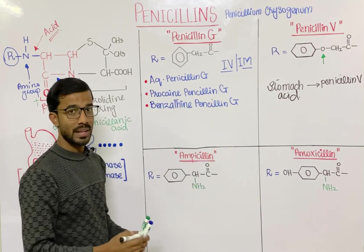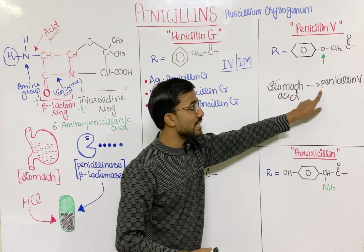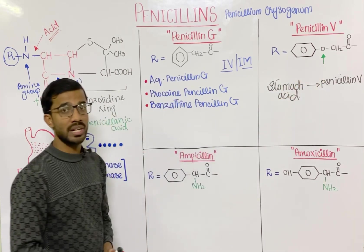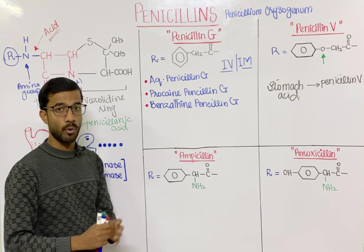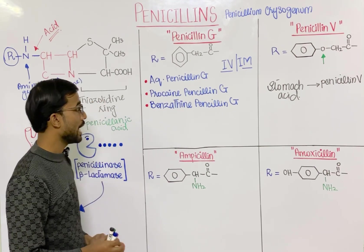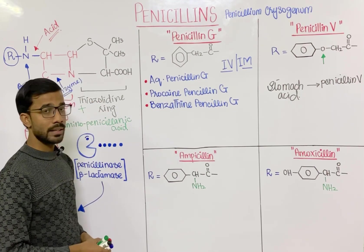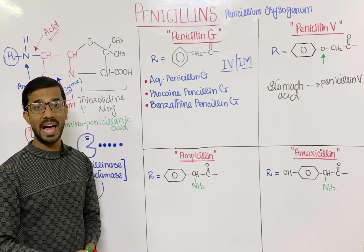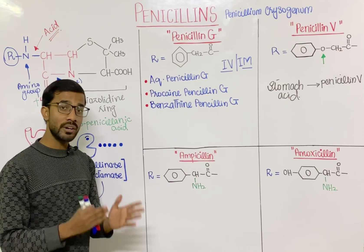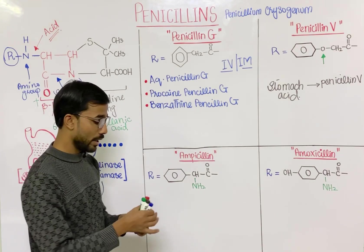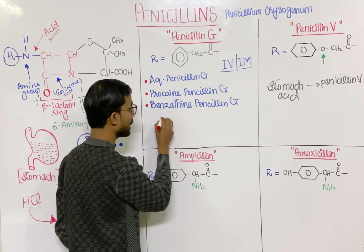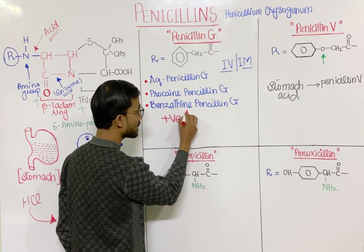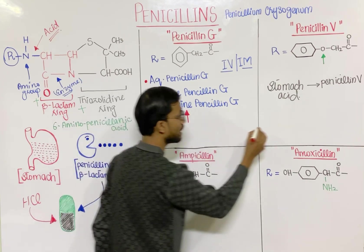Stomach acid has little effect on penicillin V just because of the presence of the oxygen atom. Now, what bacteria are actually susceptible to penicillin G and penicillin V? The general rule is that gram-positive bacteria are generally susceptible to penicillin G and penicillin V.